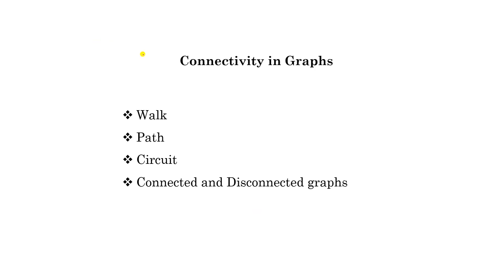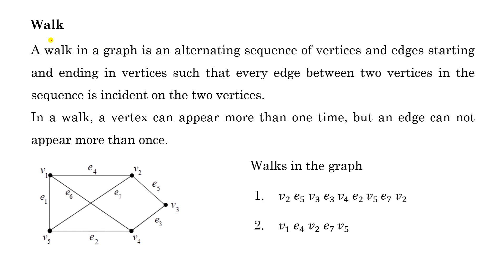Hello everyone. In this lecture we will discuss connectivity in graphs and we will cover the following topics: walk, path, circuit, connected and disconnected graphs. Let us start with a walk. A walk in a graph is an alternating sequence of vertices and edges, starting and ending in vertices, such that every edge between two vertices in the sequence is incident on the two vertices.